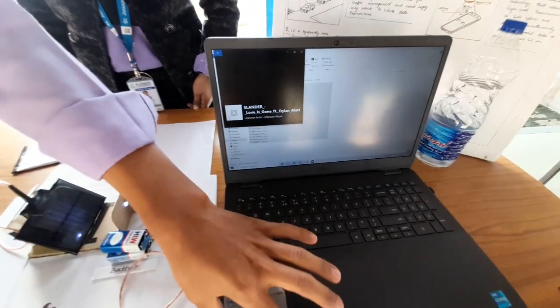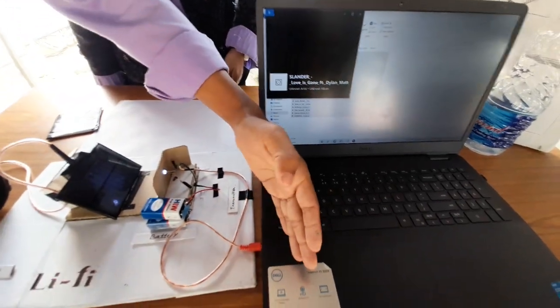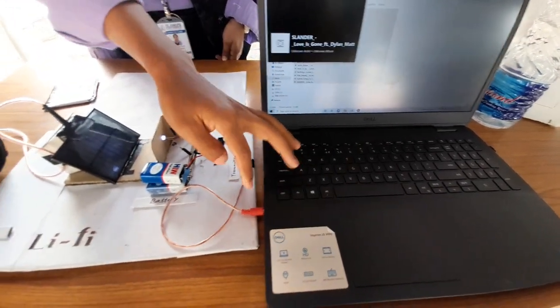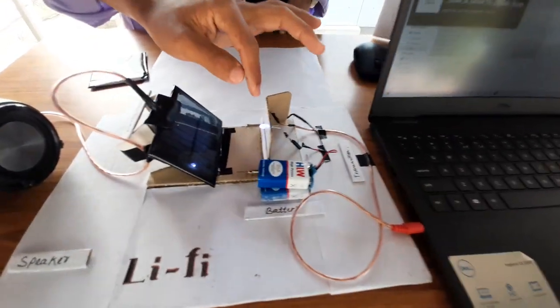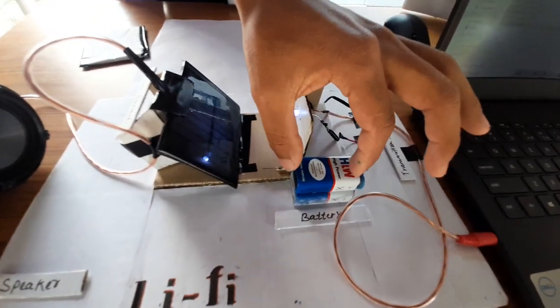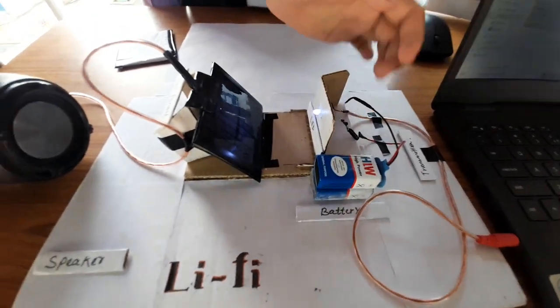We are going to play a song here. We are playing a song and then the audio signal is transmitting through this aux cable to the LED light. And we use this battery to light this LED bulb.